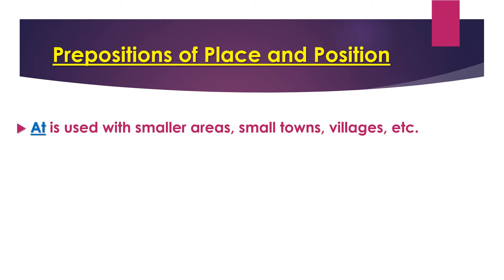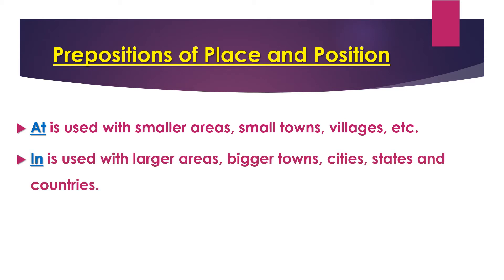'At' is another confusing preposition — it is used both as a preposition of place and of time. As a preposition of place, whenever we are talking about a small area — a small town, village, or small city — we use 'at.' But if we are talking about a larger area: bigger towns, bigger cities, states, or countries, then we use 'in.' For the smaller region use 'at,' for a larger area use 'in.'